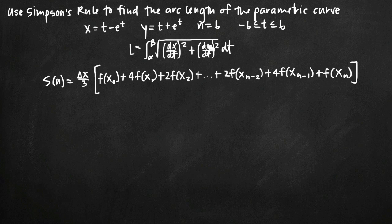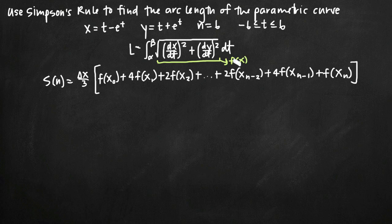Before we can use Simpson's rule to find an approximation for arc length, we have to find a function for arc length using the arc length formula. We'll plug everything in and get some value inside our integral, which we'll call f of x. In our Simpson's rule formula, we have f of x sub 0, f of x sub 1, etc. — this value inside the integral is the function into which we plug our x sub values. It includes dx over dt and dy over dt, the first-order derivatives of our equations for x and y, so let's find those first.